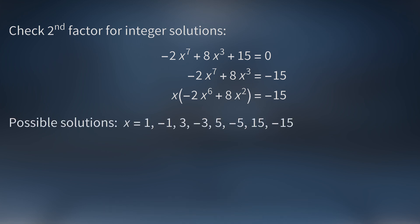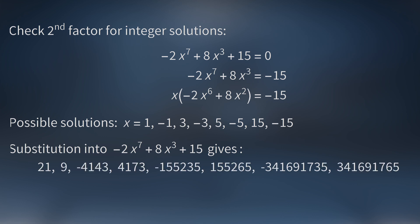Here's a list of all possible solutions. They are all the positive and negative integers that divide -15 evenly. If we plug these numbers into the factor -2x⁷ + 8x³ + 15 we get these eight values. None of them are zero, so we're done. The only solution to the original Diophantine equation is x = 0.